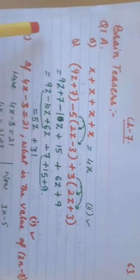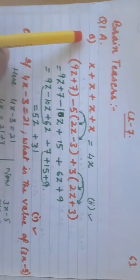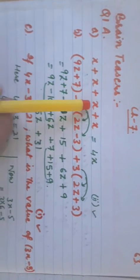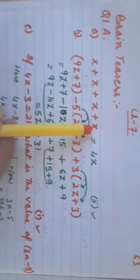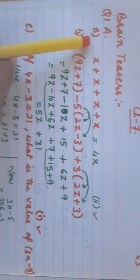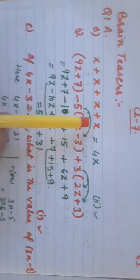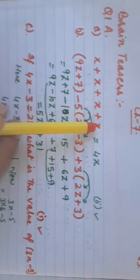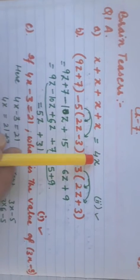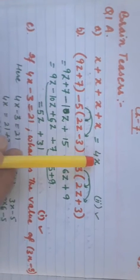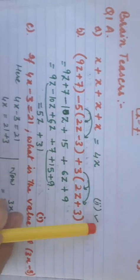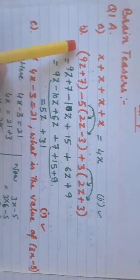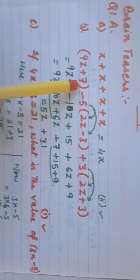The first question is there, question number A, part A. We have x plus x plus x plus x. The coefficient of each x is 1, so 1 plus 1 plus 1 plus 1 equals 4, giving us 4x. The second option is the correct answer.